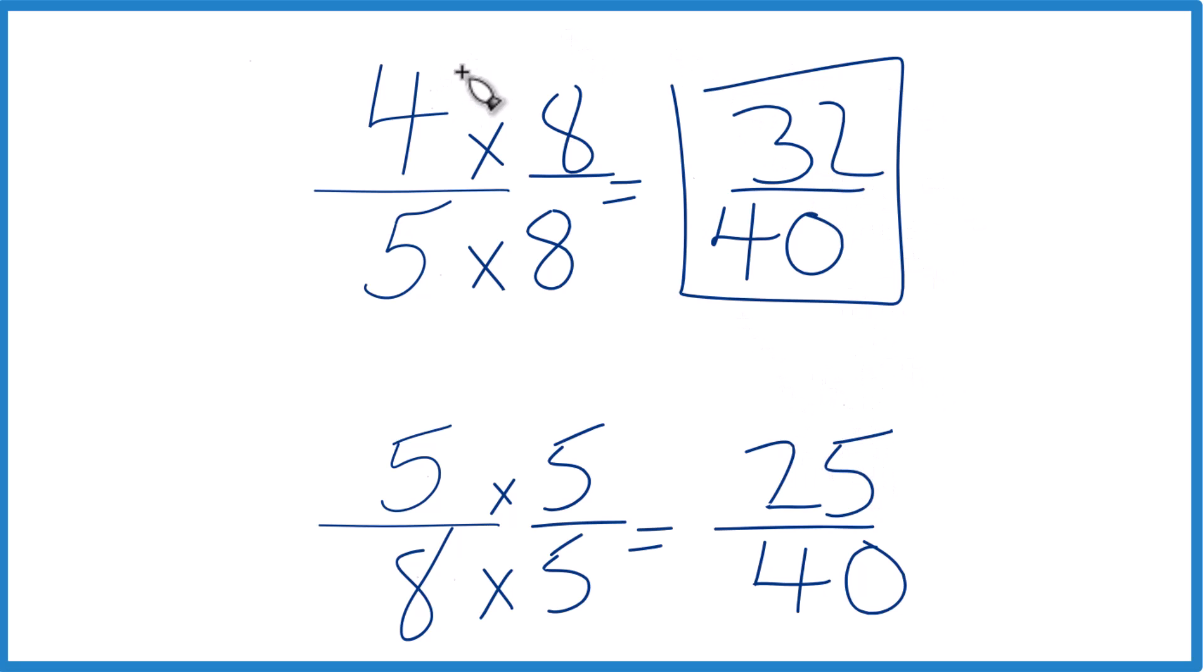It's greater since these are the same and these are the same, that 4 fifths, that's going to be greater than 5 eighths by 7 fortieths.